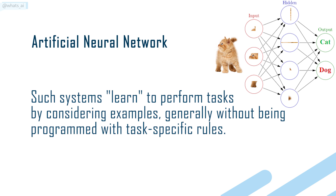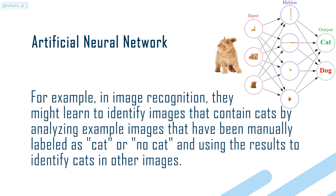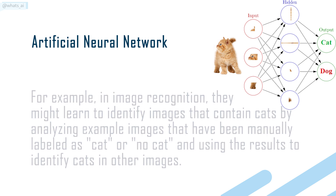Such systems learn to perform tasks by considering examples, generally without being programmed with task-specific rules. For example, in image recognition, they might learn to identify images that contain cats by analyzing example images that have been manually labeled as cat or no cat, and using the results to identify cats in other images.